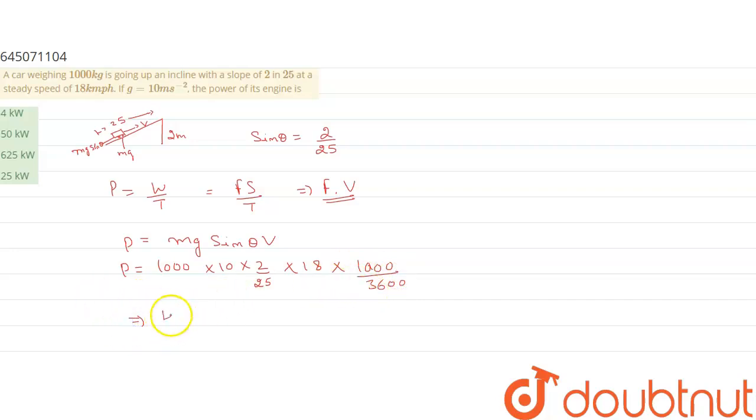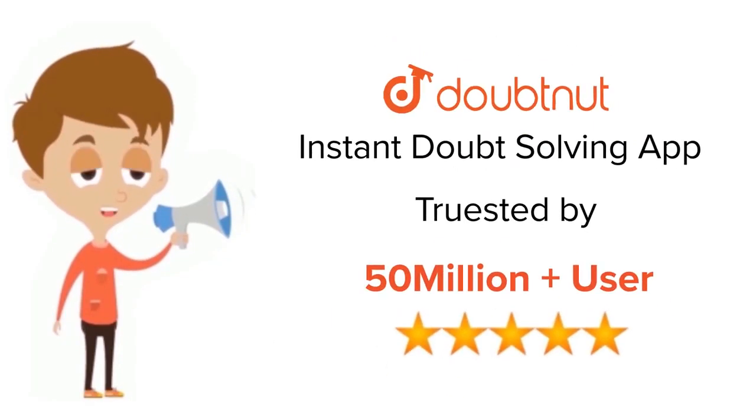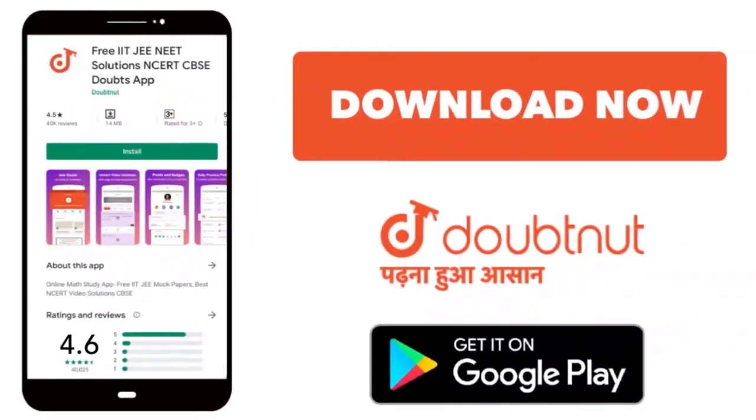we will be getting 4000 watts, which can be written as 4 kilowatt of power. Right? So if we go through the options, this is the correct answer for the given question. For class 6-12, IIT-JEE and NEET level, trusted by more than 5 crore students, download Doubtnet app today.